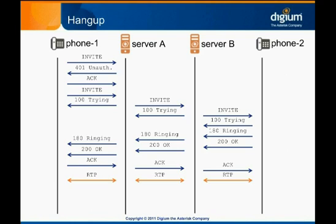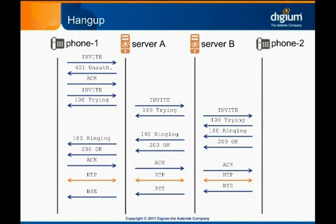When one of the phones is hung up, it sends a message called BYE to the other end of its call. In this example, phone 2 ends the call. A BYE message is sent to server B, server B sends the BYE to server A, and server A repeats the process by sending BYE to phone 1. Receipt of a BYE message causes the phone to stop processing media for the call and to indicate to the user that the call was hung up. BYE messages are responded to with a 200 OK, which is propagated back to phone 2 through each server, and the call is officially over.